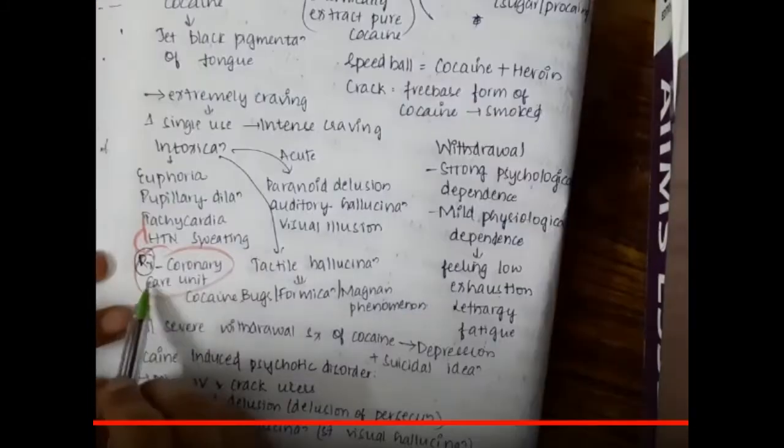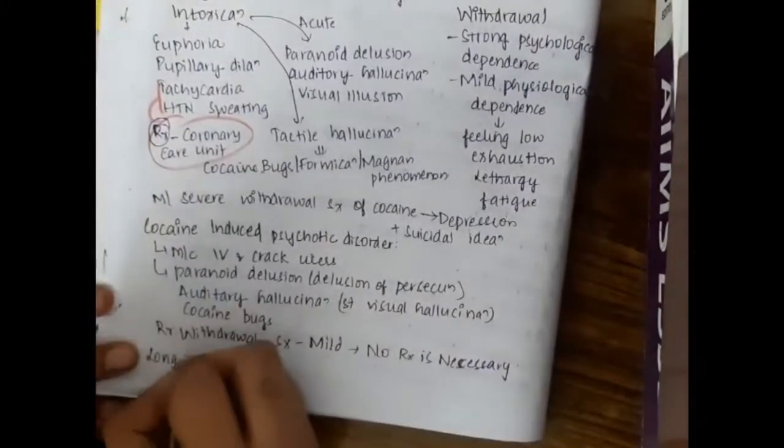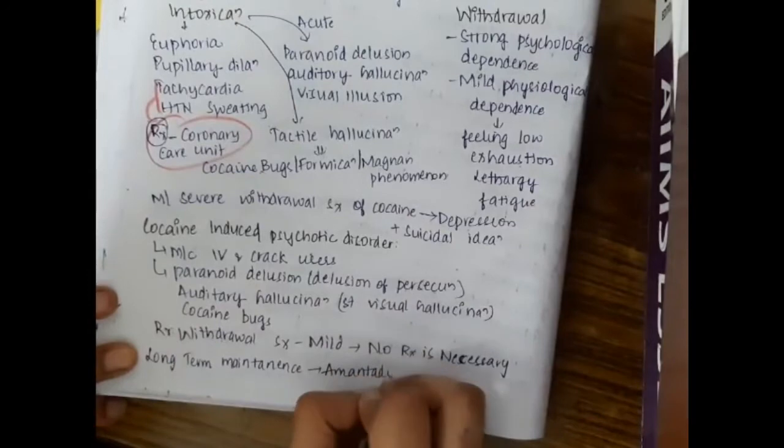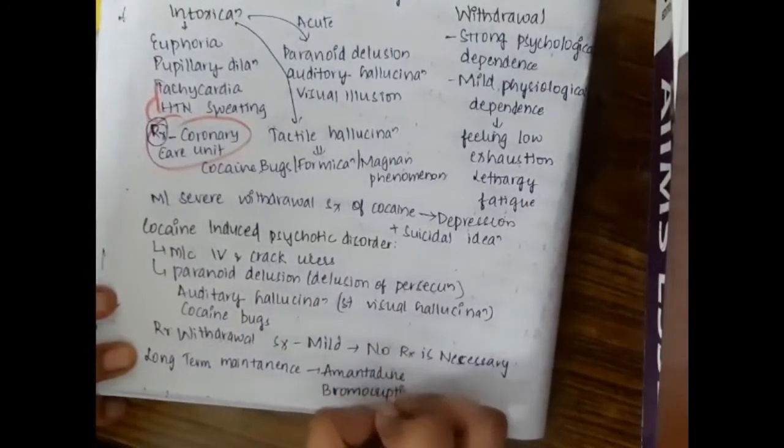One more thing about cocaine: it causes hypertension and sweating. Because it has increased risk of causing ischemic myocardial injury, we always have to treat the intoxication of cocaine in the coronary care unit. Long-term maintenance of cocaine is done by amantadine and bromocryptin.